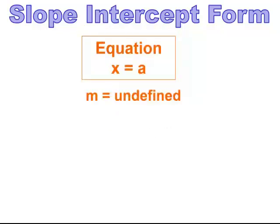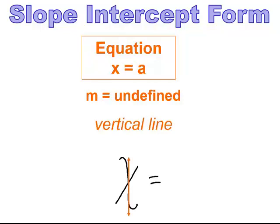When you have an equation where x equals a value, the slope is undefined. And when the slope is undefined, we have a vertical line. A way of remembering this is that x creates a vertical line, and that vertical line is what the picture is going to look like.